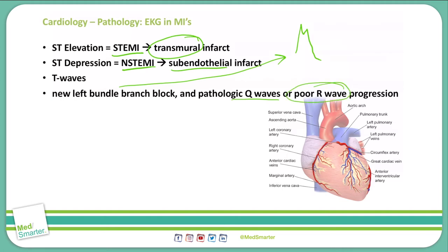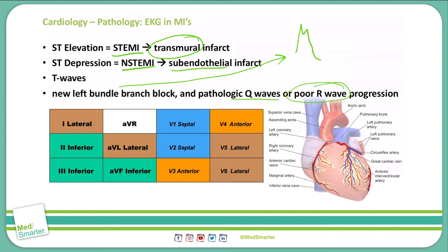As you see in this chart, various leads on an EKG will tell us where the infarction may possibly be. The brown leads — located in 1, AVL, as well as V5 and V6 — show a lateral or anterolateral MI, typically associated with a left anterior descending or left circumflex artery occlusion.